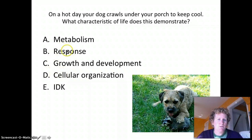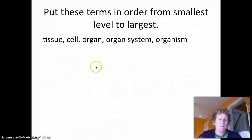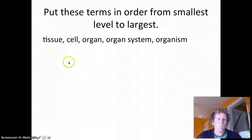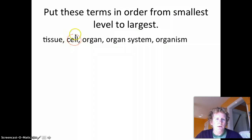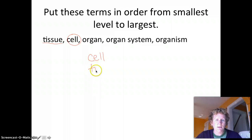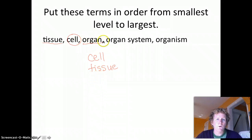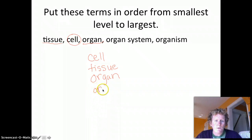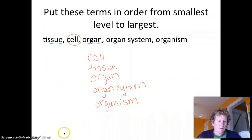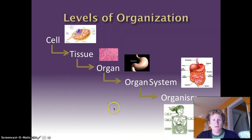Let's put these terms in order from smallest to largest. A cell is the smallest, so we'll put cell first. All the same kinds of cells organize into a tissue, so tissue is second. Different sorts of tissues make up your kidneys, and your kidneys are an organ, so organ is next. Your kidneys are part of an organ system — your excretory system, which gets rid of waste. Then all your organ systems working together make you as an organism.